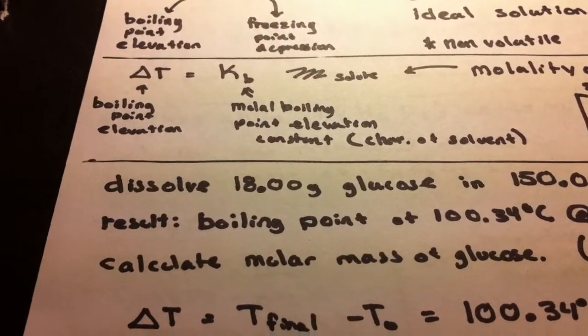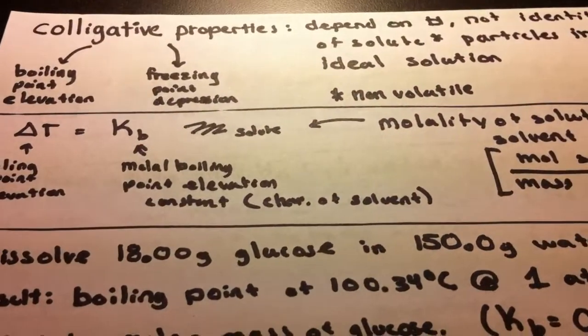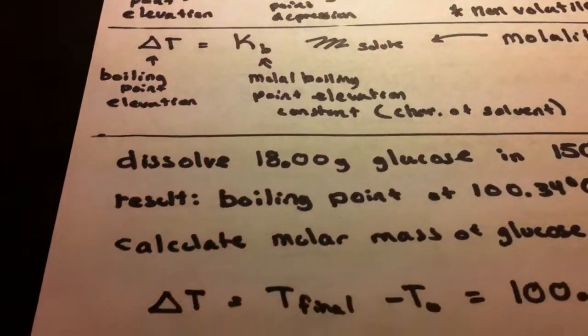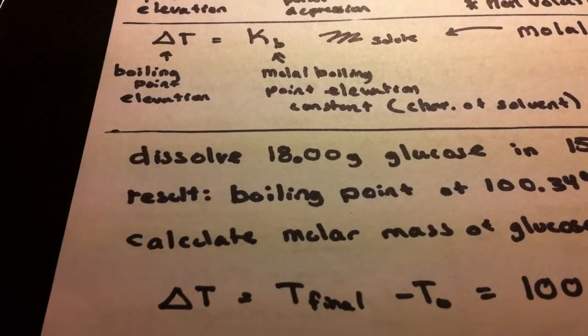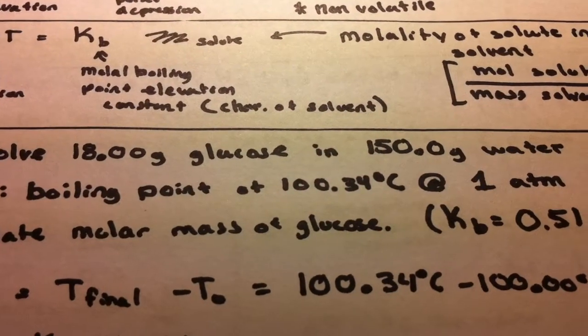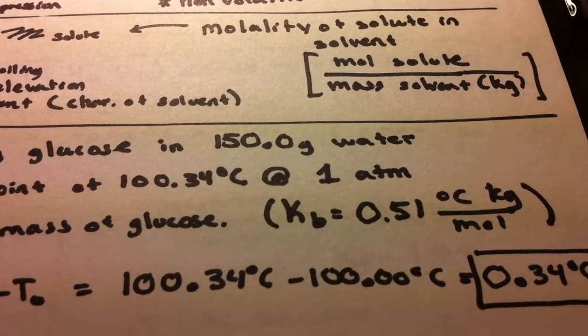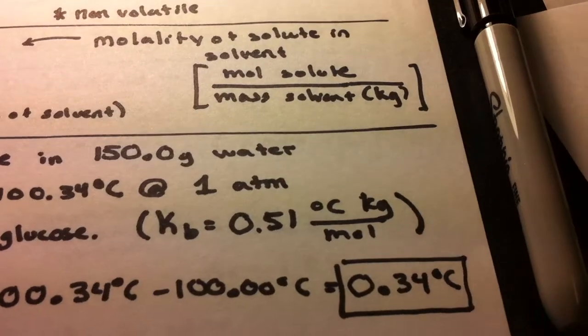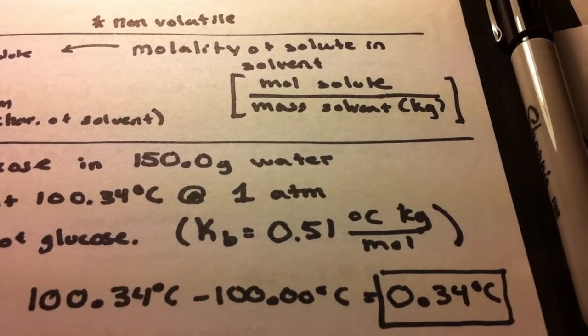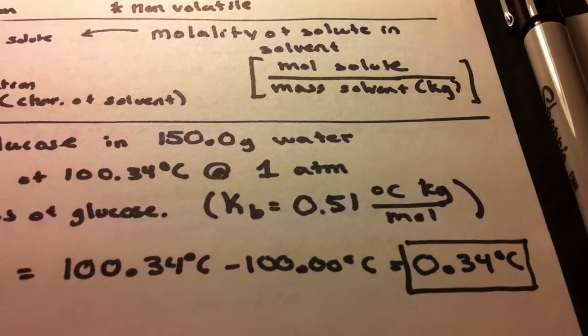So right now we can find delta T right off the bat, because we know that the new boiling point is 100.34 and we know that water typically boils at 100 degrees Celsius. So 100.34 minus 100 degrees Celsius, that's going to equal a new boiling point elevation of 0.34 degrees Celsius.